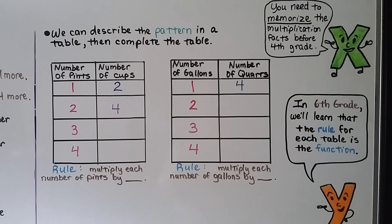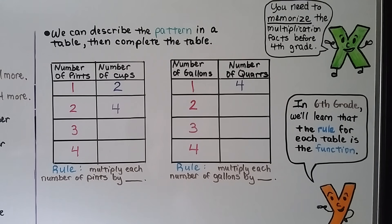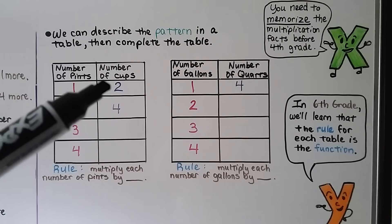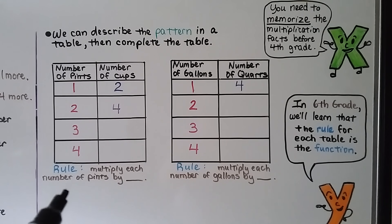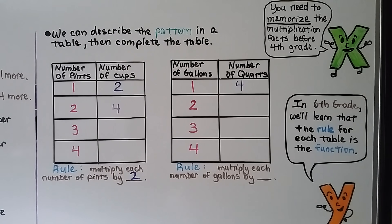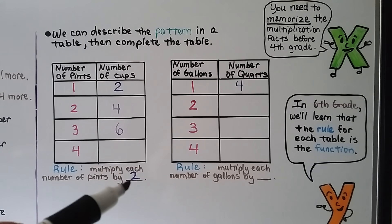We can describe the pattern in a table, then complete the table. This table shows the number of pints and the number of cups. If we have 1 pint, we have 2 cups. If we have 2 pints, we have 4 cups. The rule is to multiply each number of pints by 2. So 3 pints times 2 equals 6 cups, and 4 pints times 2 equals 8 cups.